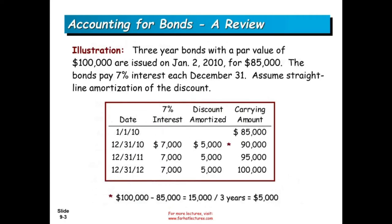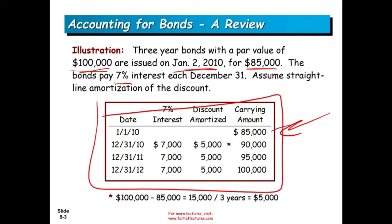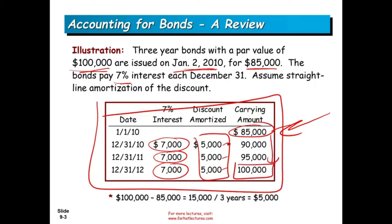Let's go back to basics and illustrate an example about bonds to make sure you are familiar. A three-year bond with a par value of $100,000 was issued on January 2, 2010 for $85,000 — so it was issued at a discount. The bond pays 7% interest each December, assuming straight-line amortization. This is the amortization table: the carrying value at issuance is $85,000. The bond pays interest of 7%, which is $7,000 per year. We have a total discount of $15,000, amortized straight-line at $5,000 each year, and the bond carrying value returns to $100,000 at maturity.